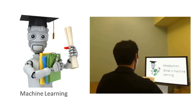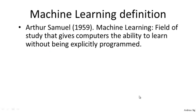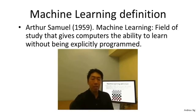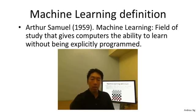Here's a definition of machine learning due to Arthur Samuel. He defined machine learning as the field of study that gives computers the ability to learn without being explicitly programmed. Samuel's claim to fame was that back in the 1950s, he wrote a checkers playing program. The amazing thing was that Arthur Samuel himself wasn't a very good checkers player. But he had the program play tens of thousands of games against itself, and by watching what board positions tended to lead to wins or losses, the program learned to play checkers better than Arthur Samuel himself. This was a remarkable result.